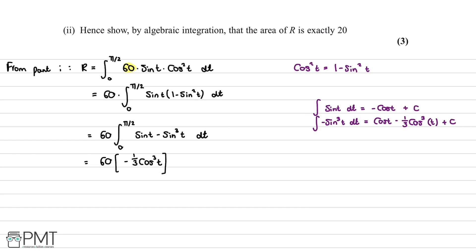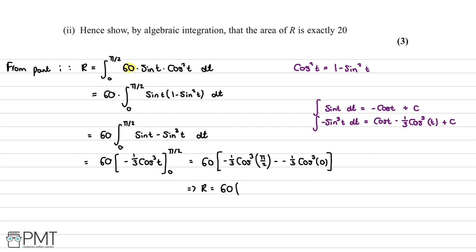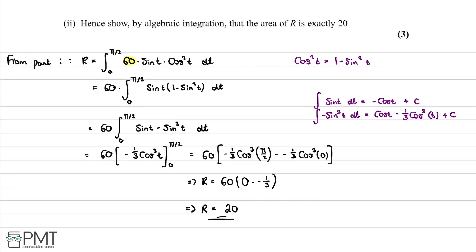Evaluating −(1/3)cos³(t) between 0 and π/2: we get 60 × [−(1/3)cos³(π/2) − (−(1/3)cos³(0))]. Since cos(π/2) = 0, the first term is 0. Substituting t = 0 gives −(1/3)cos³(0) = −(1/3). Subtracting −(1/3) gives +(1/3), so R = 60 × (1/3) = 20.